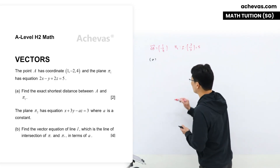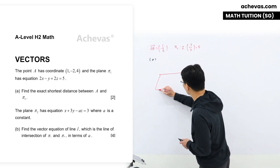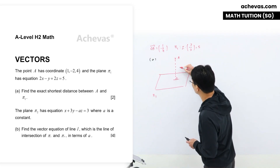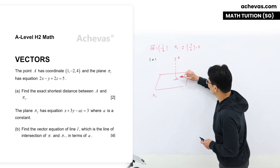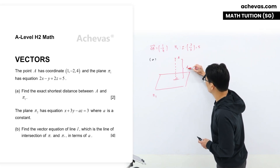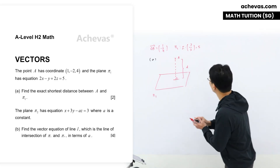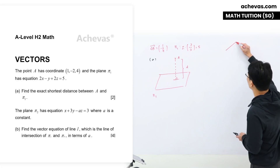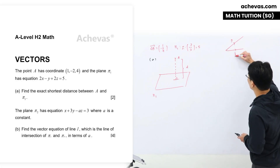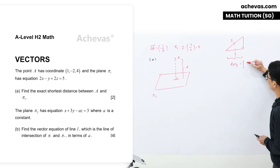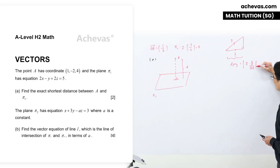I'll be drawing a diagram to illustrate this scenario. We have π₁, we have a point A, and the shortest distance will be from point A perpendicular to the plane — we can call this D. To find this, I'm going to use the length of projection method, which states that if we have vectors A and B, with B perpendicular, the length of projection is given by A · B over the modulus of B, or A · B-hat.